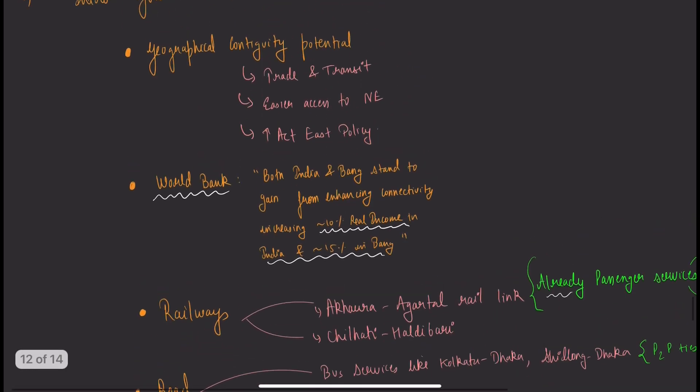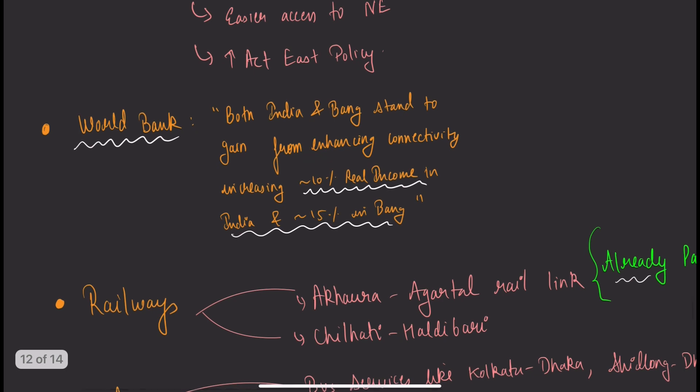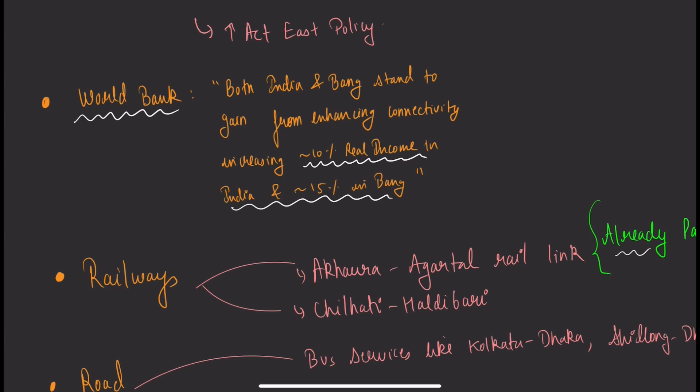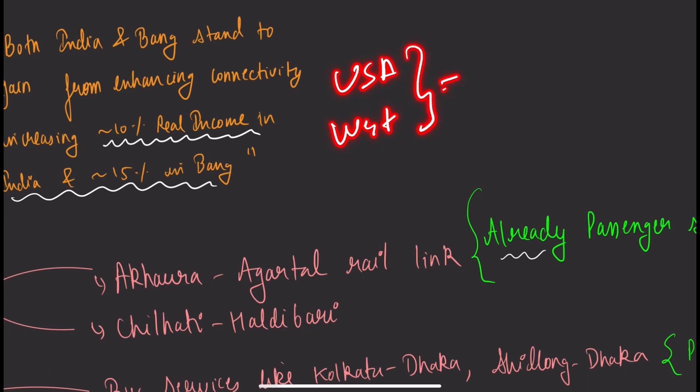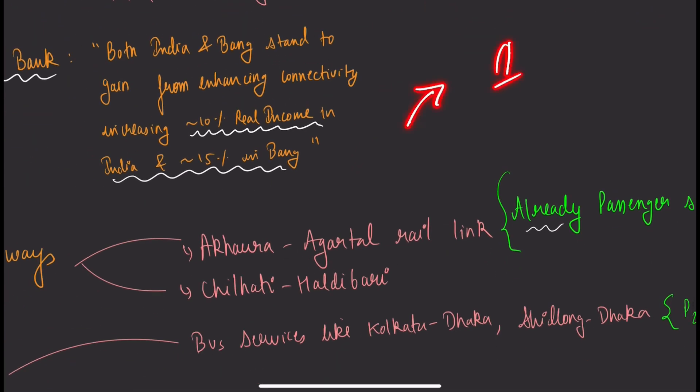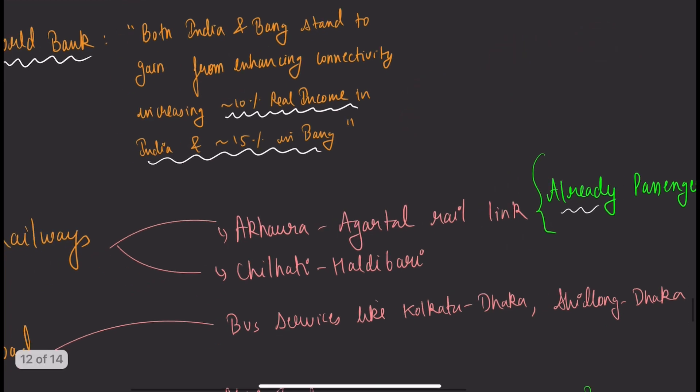World Bank says both India and Bangladesh stand to gain from enhancing connectivity—increasing 10% real income in India and 15% in Bangladesh. Though percentage is bigger in Bangladesh, in absolute terms India gains more because we have higher real income. It's like developed nations having 1-2% GDP growth which is huge for them.